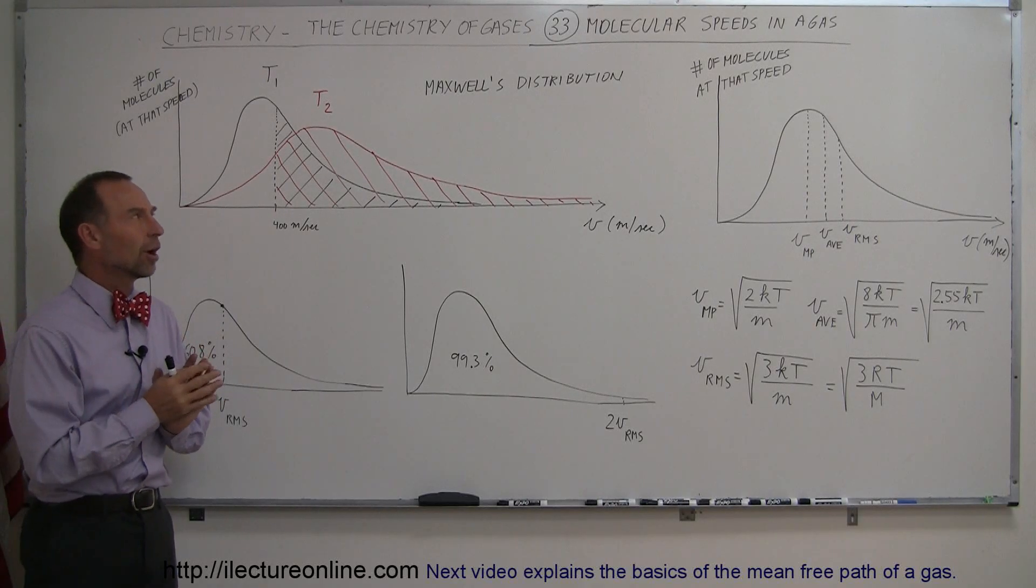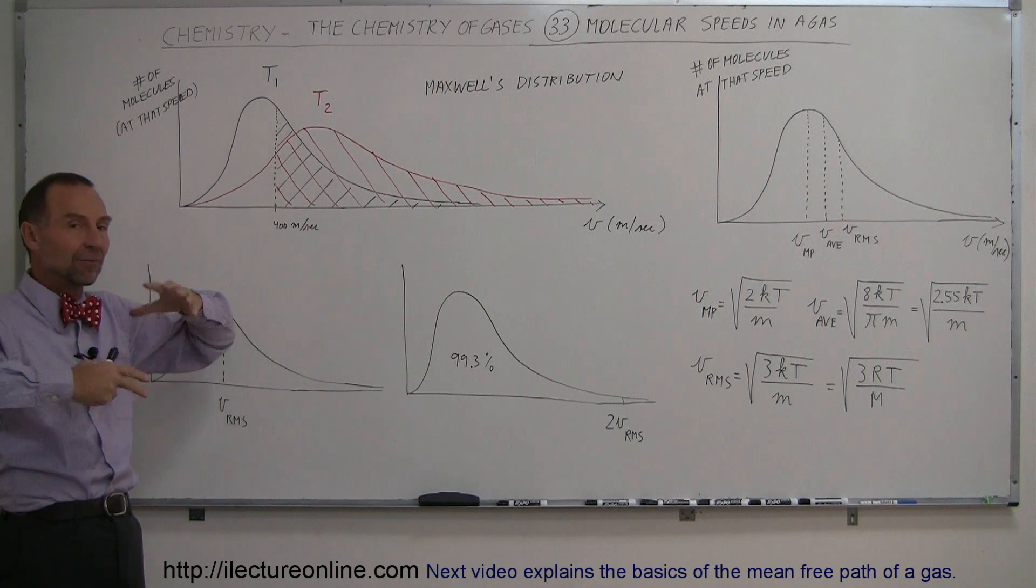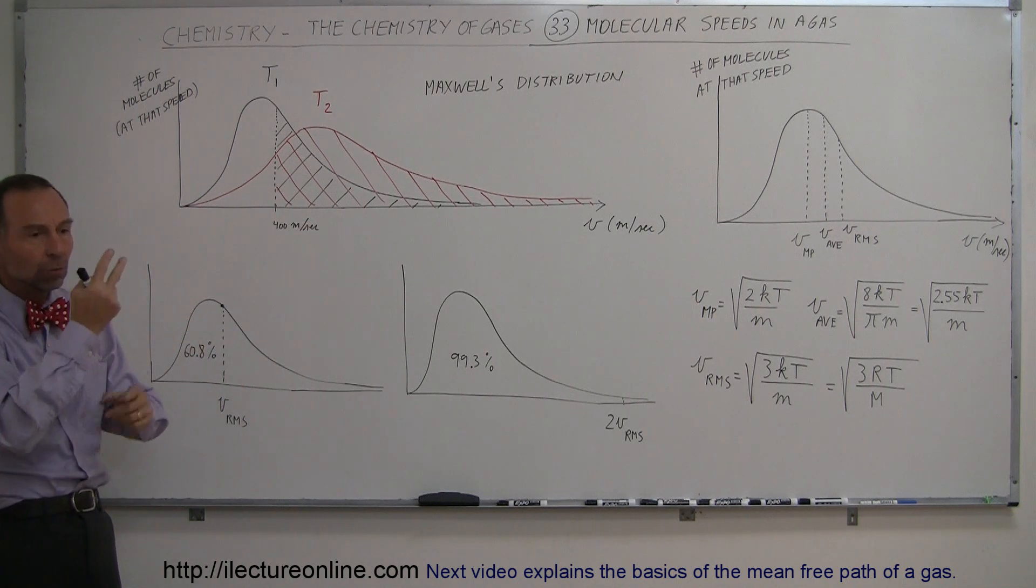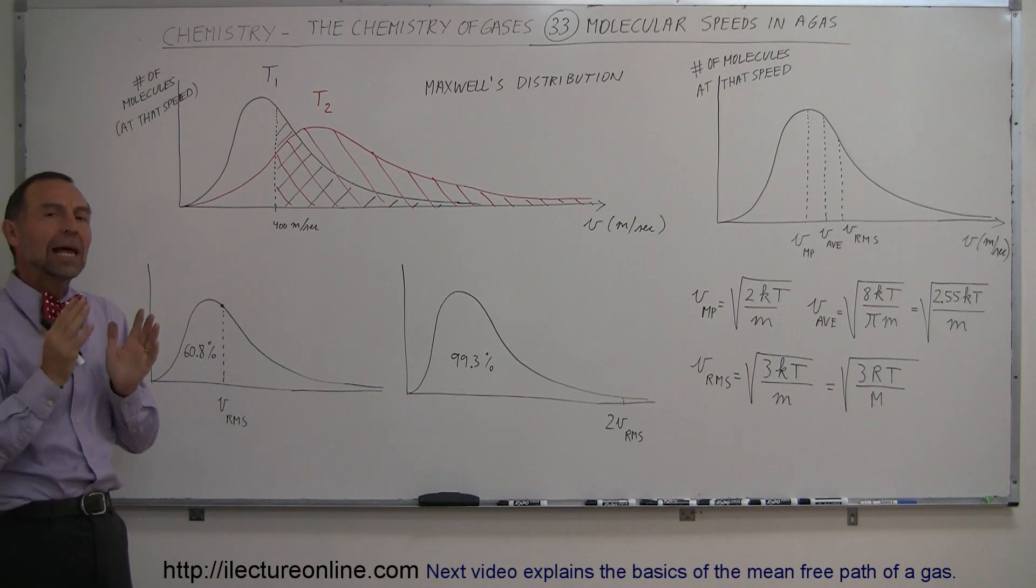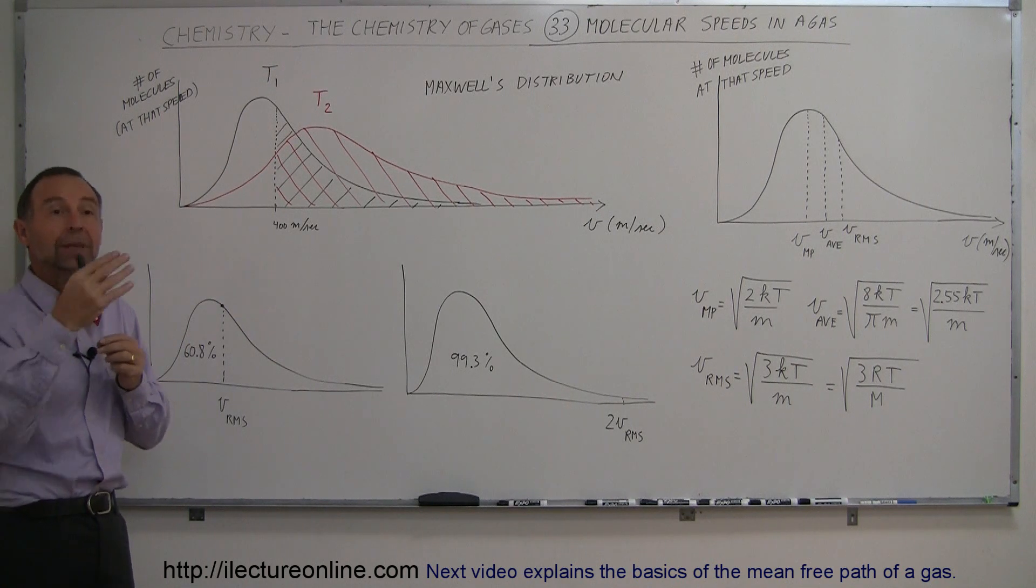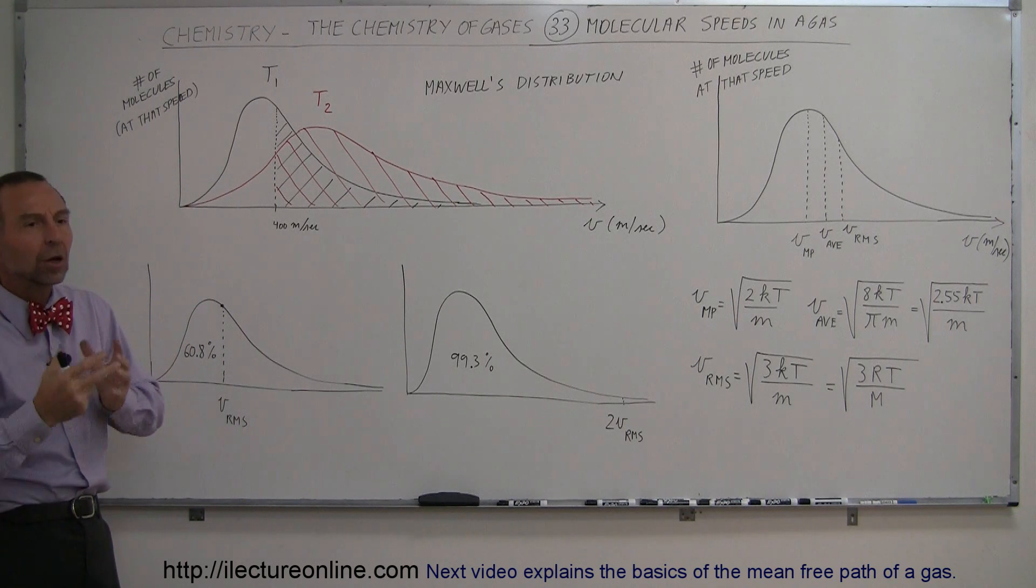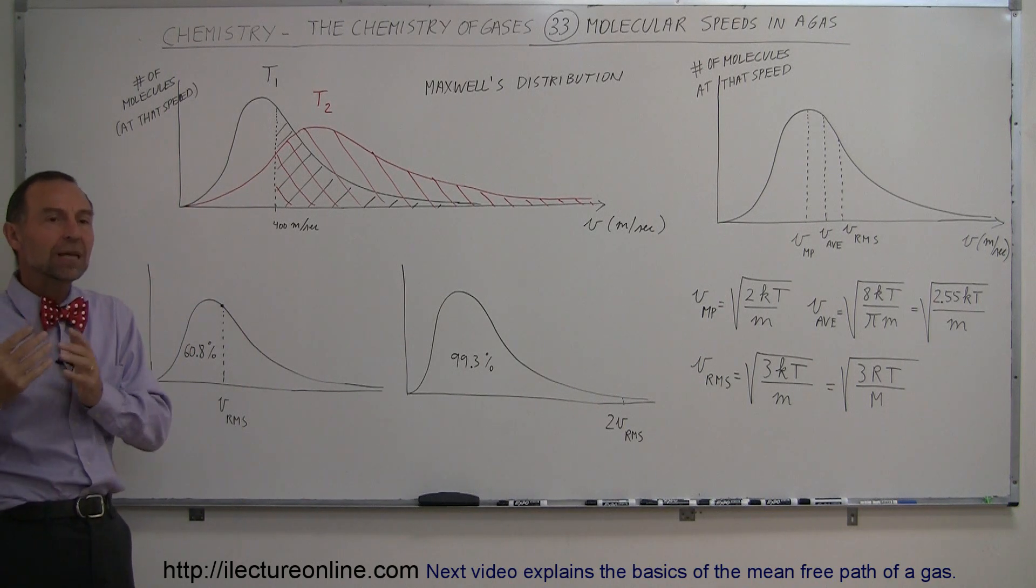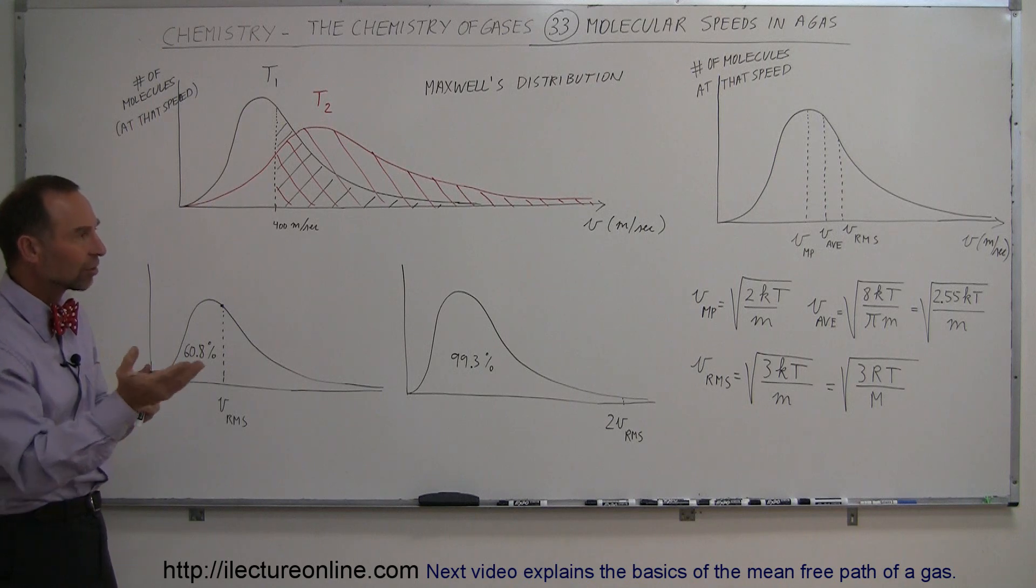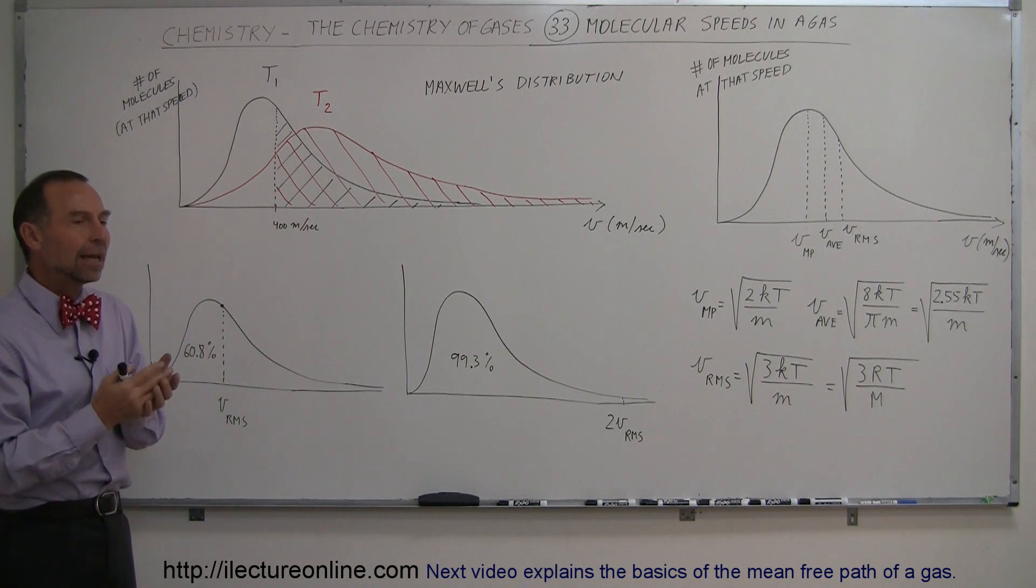Here we're going to give you a description of the molecular speeds in a gas. Let's say we have a container of gas with molecules within that container. They're all moving around and they don't all have exactly the same velocity or speed. They're bumping into each other—some get bumped and go faster, some get bumped and go slower.